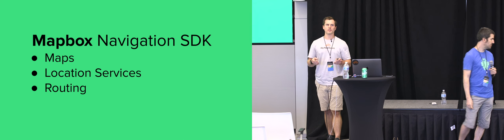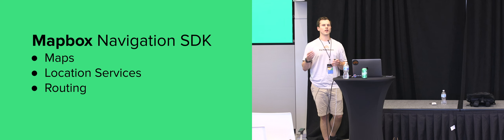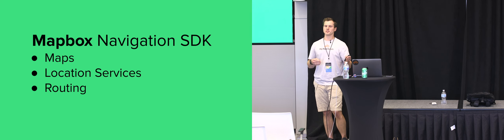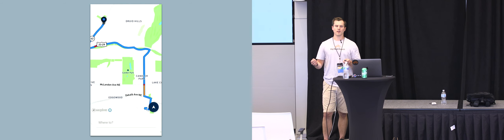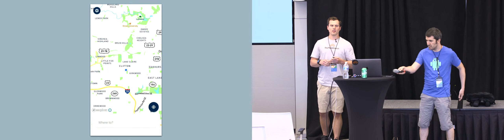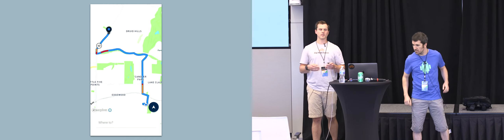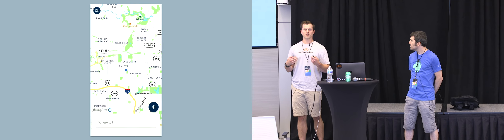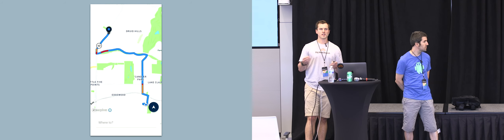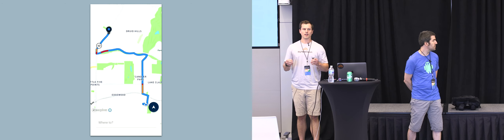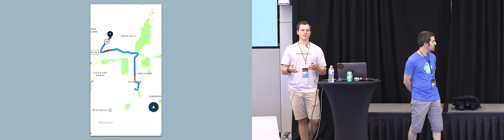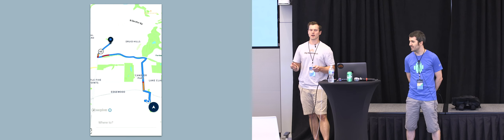The third piece is routing. Mapbox offers a Directions API that gives turn-by-turn directions from point A to point B — where you need to turn, congestion information, and so on. This is a GIF of a route retrieved from our Directions API. You can see along the route the blue, yellow, and red portions of congestion denoting traffic flow. The routing part doesn't stop at the request and response from the API — you actually have to parse all that information and render it in a performant way. For example, if you have a route from Philadelphia to San Francisco, you're getting a massive response full of congestion data and a giant route geometry that you need to give to the map and render in a performant way.